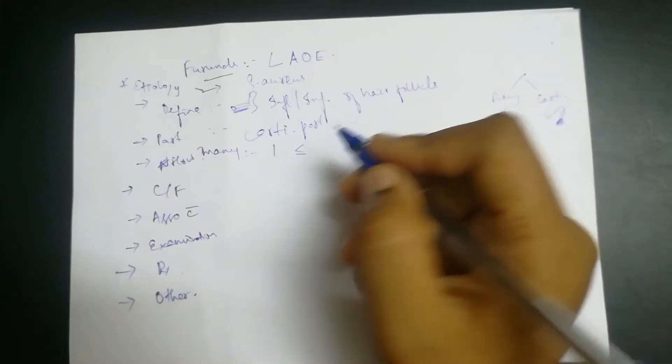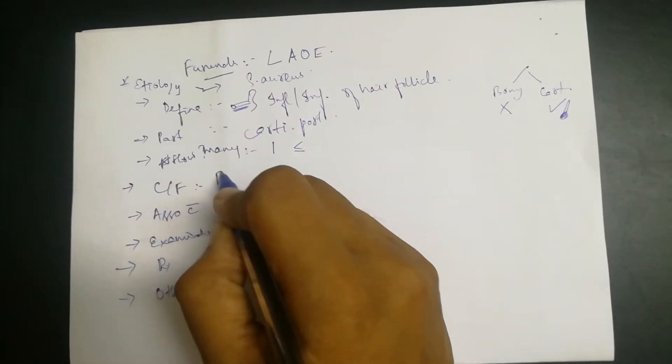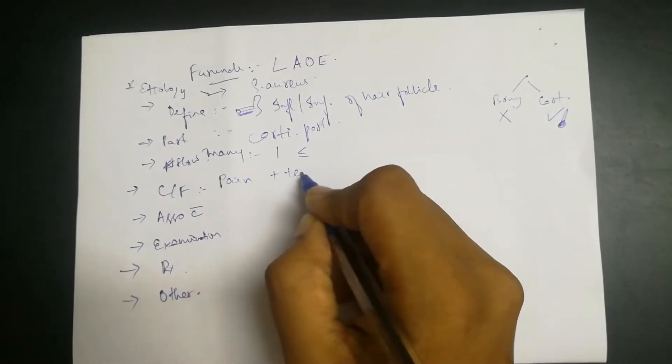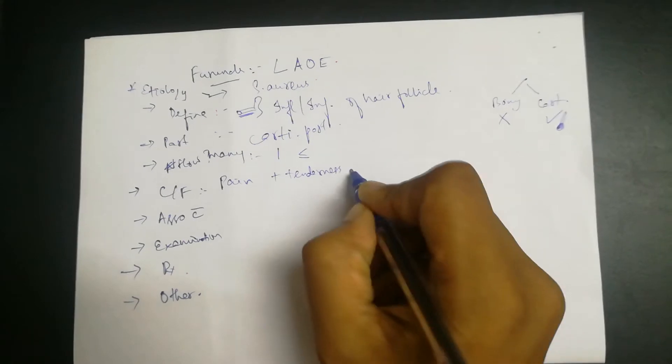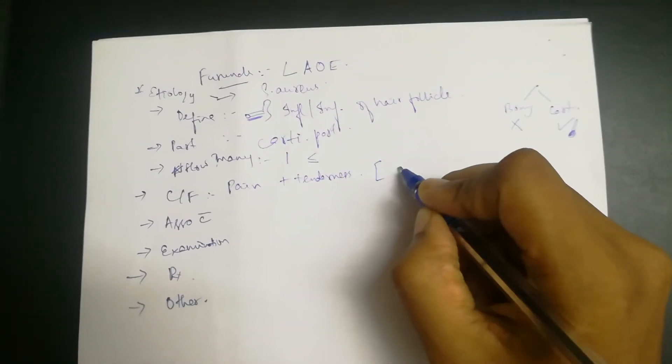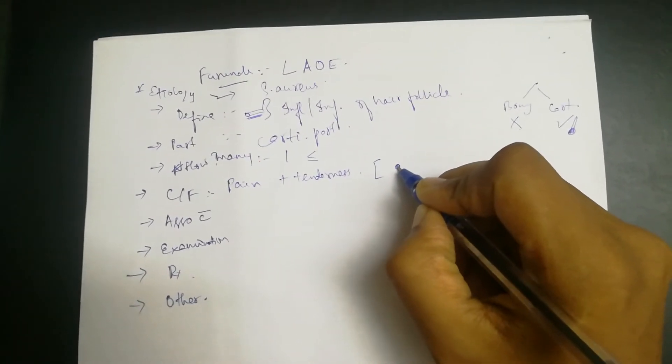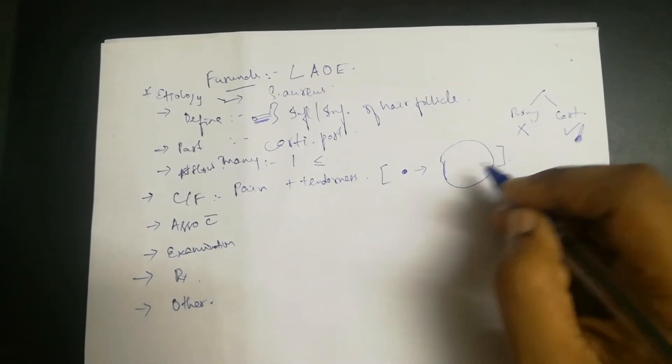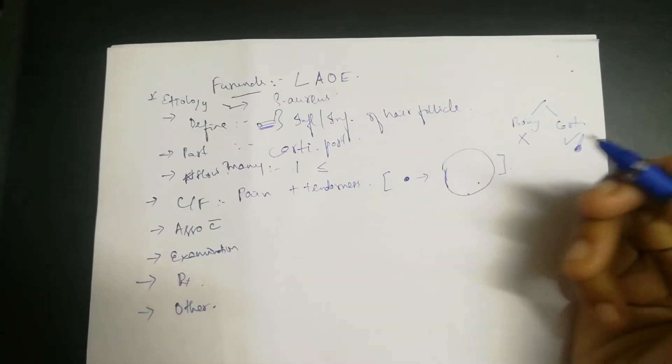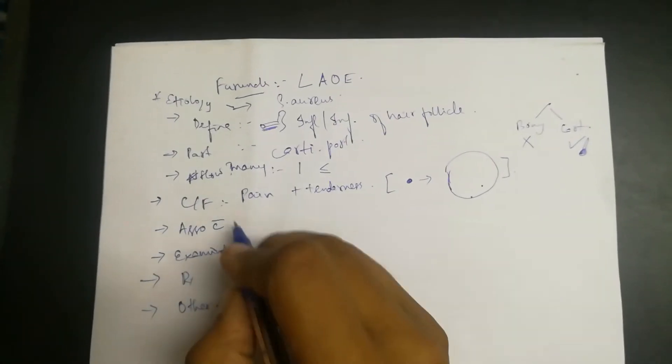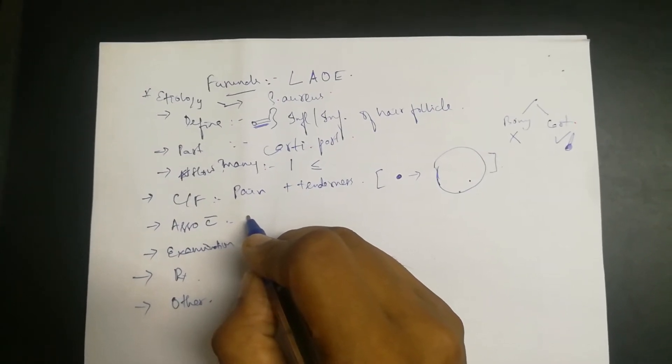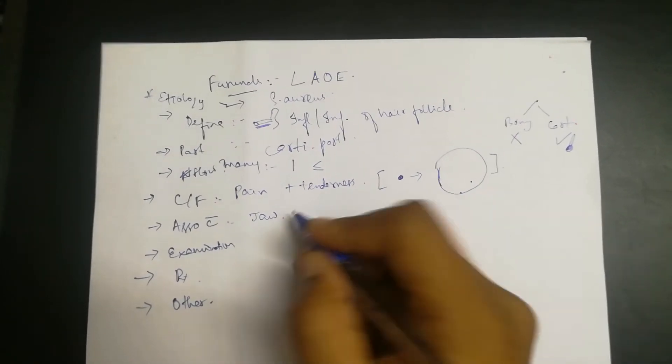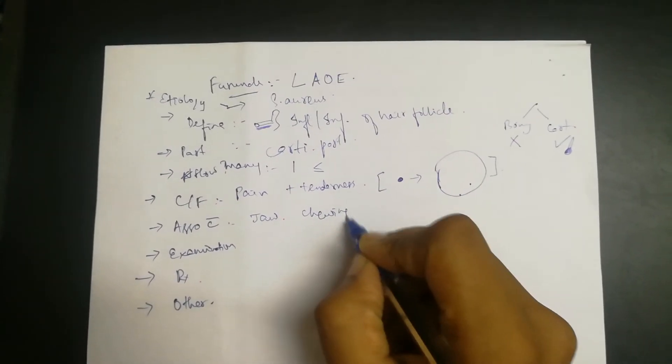Clinical features: the person presents with a lot of pain and tenderness. The key feature is that even though the boil or furuncle is very small, the pain can be severe. Pain is often aggravated on jaw movements, so when the person chews food, there's significant pain.